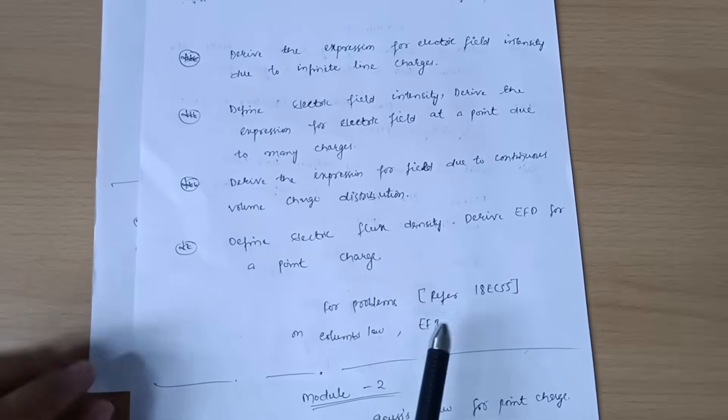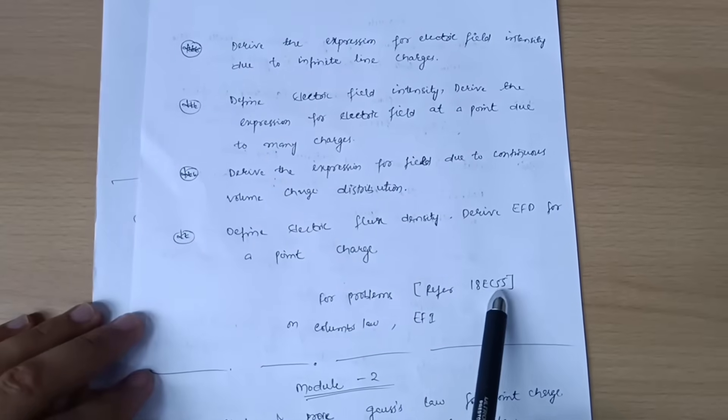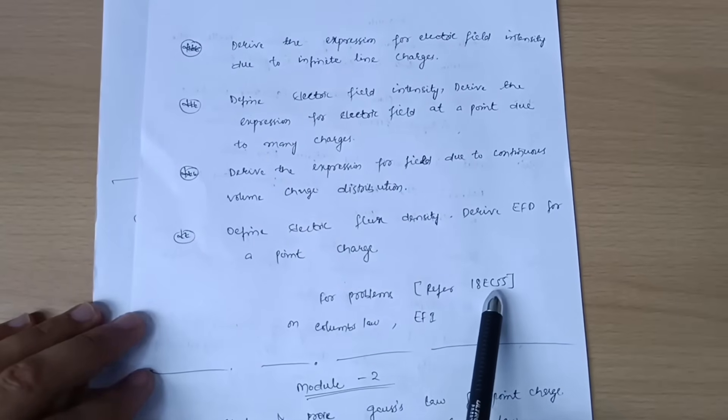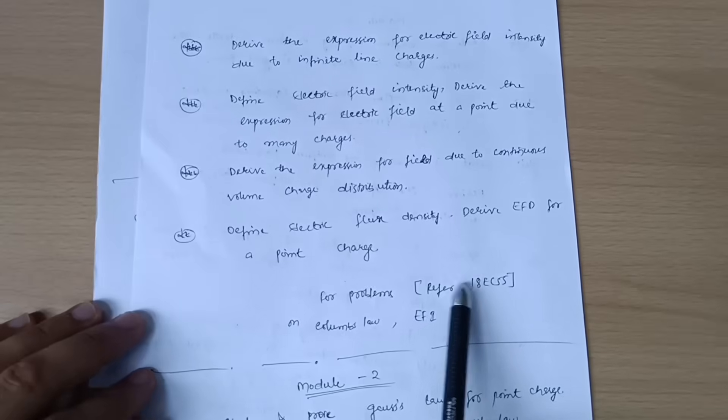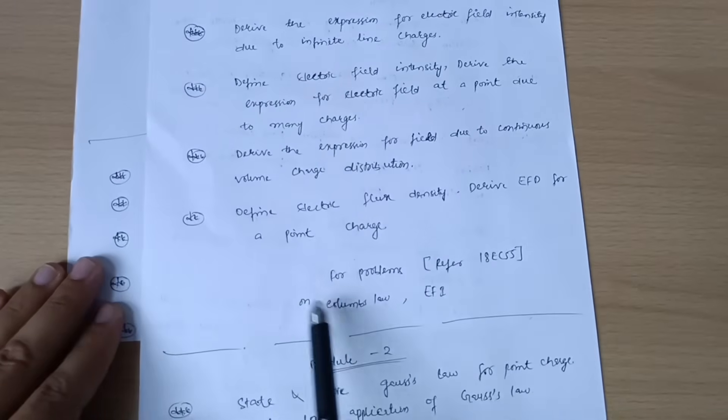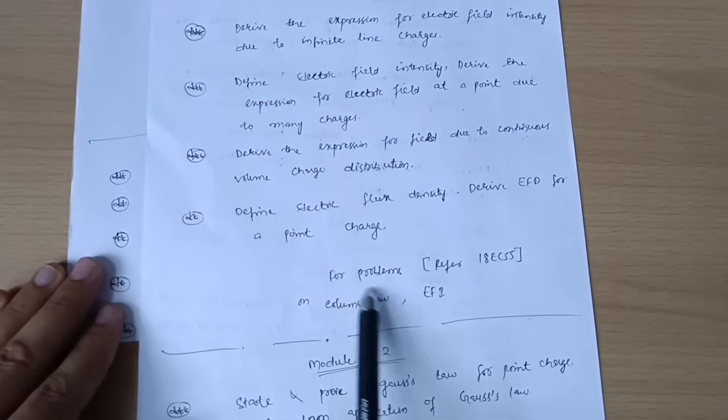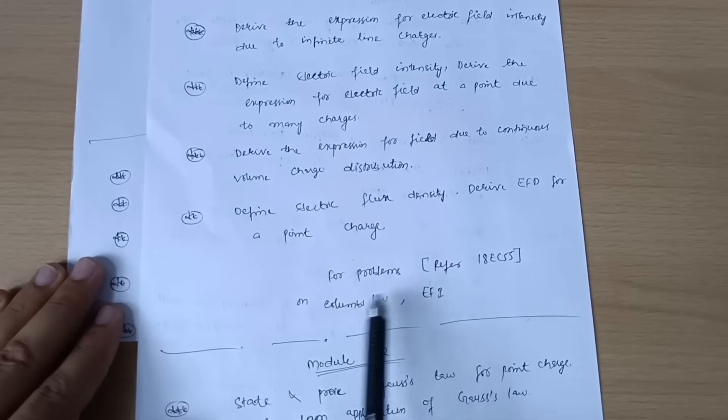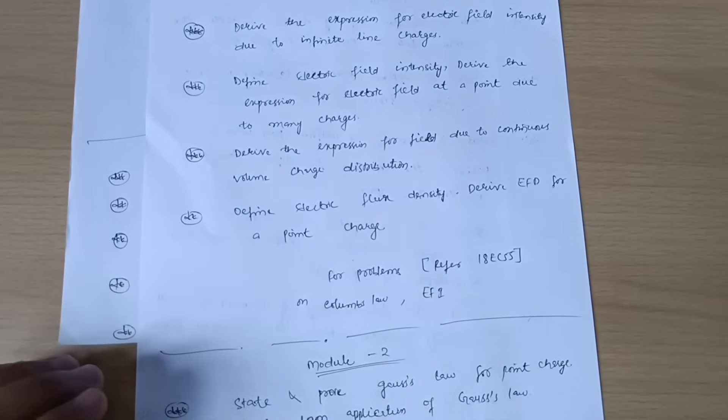As far as problems are concerned, you should refer 18EC55 paper. If you are unable to get it, let me know in the comment section so that I can provide the papers. On Coulomb's law, you have to solve the numericals, and for electric field intensity, go through the numerical part. If you are confident, you should surely practice for the numerical part also.